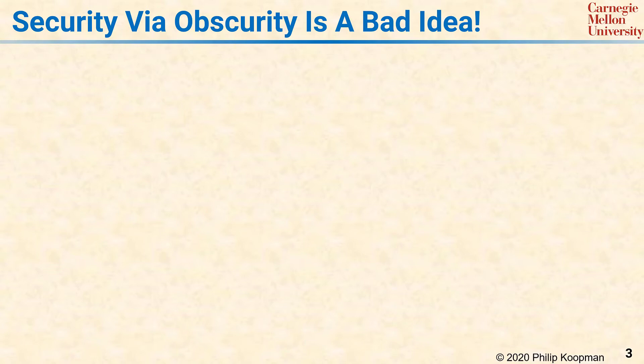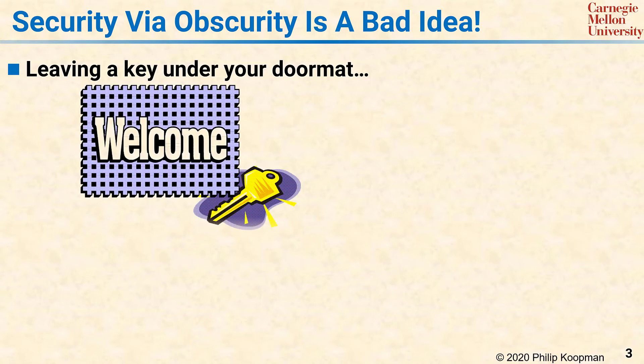In everyday life, security by obscurity is something like leaving a key under your doormat. Assuming that the key is really a good key, leaving it under your doormat means the attacker doesn't need to know what's in the key. Rather, the attacker just needs to look under the doormat and see if the key is there. In other words, leaving the key under your doormat is not secure.